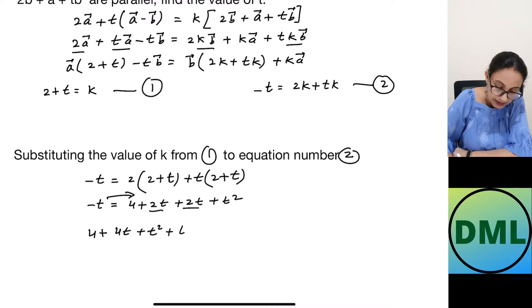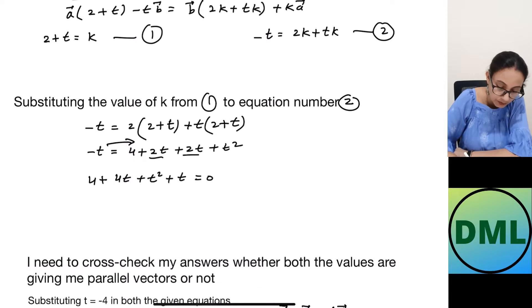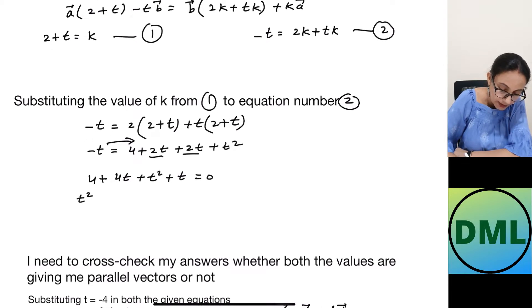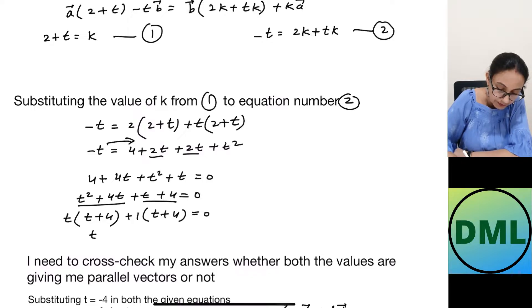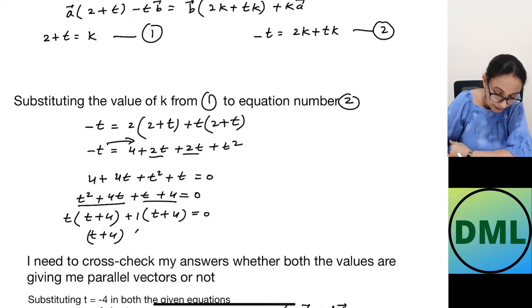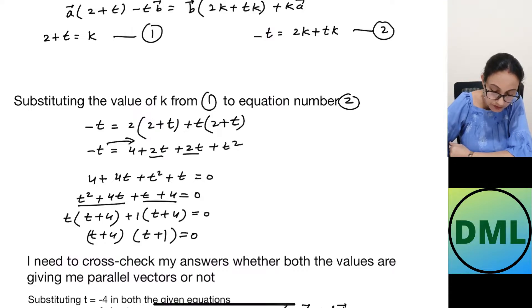Rearranging: t² + 4t + 4t + t + 4 = 0, which simplifies to t² + 5t + 4 = 0. Factoring: (t + 4)(t + 1) = 0, giving t = −4 or t = −1.